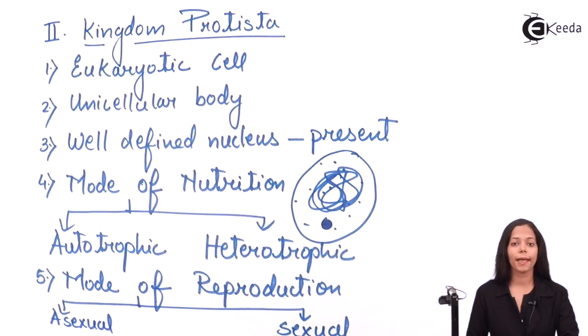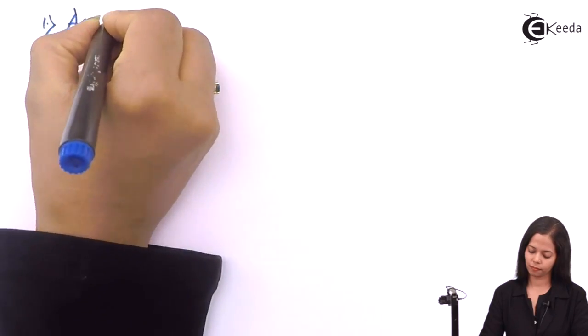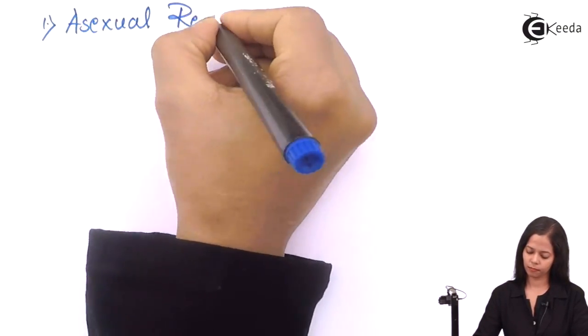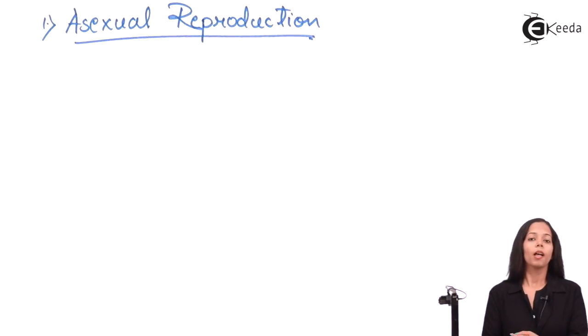We will discuss each process in detail. I will start with the asexual process. Asexual process means there is only one parent involved. It is a uniparental process. Under asexual, there are varieties. Protista carry out binary fission.